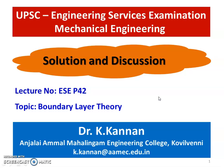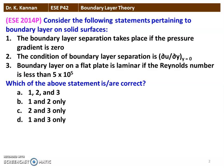We take a few questions from the Boundary Layer Theory. This first question from the 2014 question paper concerns the following statement pertaining to the boundary layer on solid surfaces. Statement 1: boundary layer separation takes place if the pressure gradient is 0. Statement 2: the condition for boundary layer separation is ∂u/∂y at y equal to 0. Statement 3: boundary layer on a flat plate is laminar if the Reynolds number is less than 5×10⁵. Statements 2 and 3 are correct.